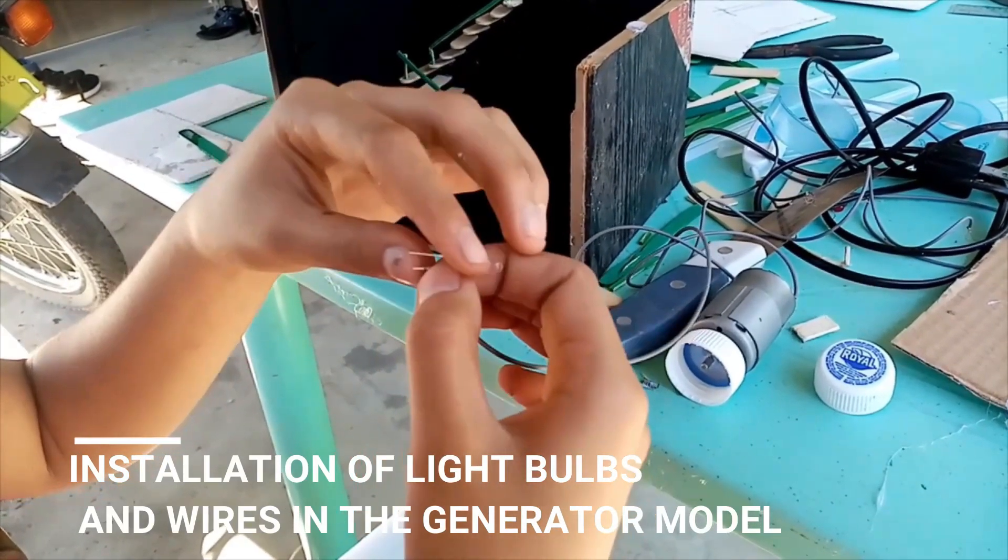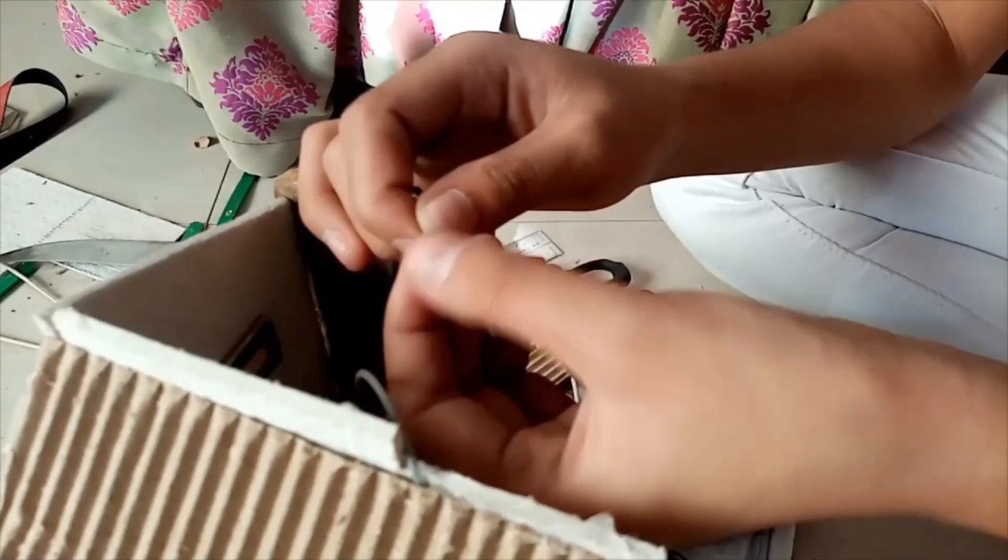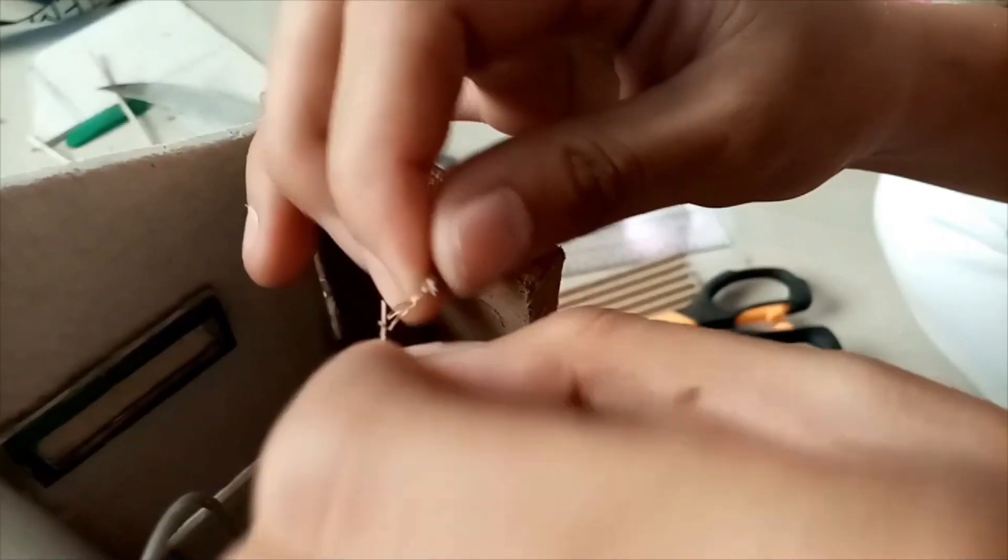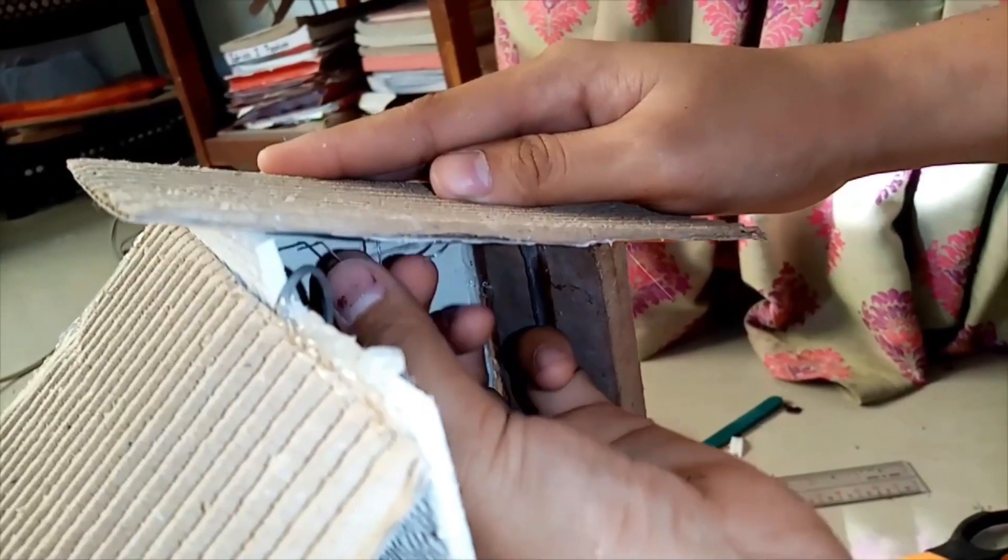The LED light bulbs were attached to the generator that was connected through a series connection. The white LED light bulbs with three volts are located at the first and second floor, while the red LED light bulb with a voltage of one volt was placed on the second floor as well.